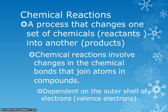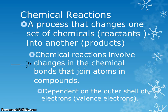Just a few basics here. A chemical reaction — you have this definition in your notes — is taking the reactants, which is what goes into a reaction, and changing them into products. Chemical reactions involve changes in the chemical bonds that join atoms in compounds, so you're rearranging chemical bonds. The way atoms interact with each other depends on that outer shell of electrons, called valence electrons.